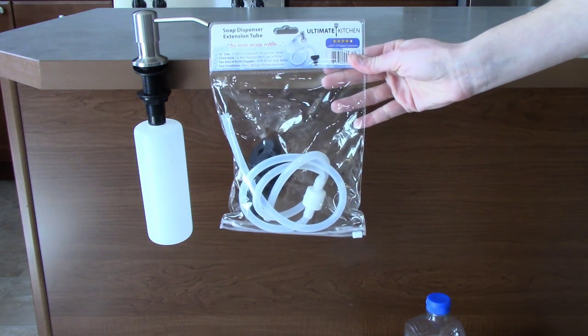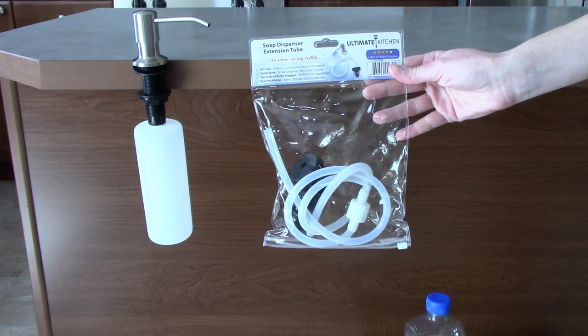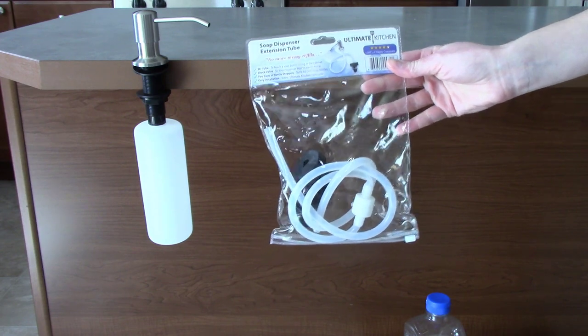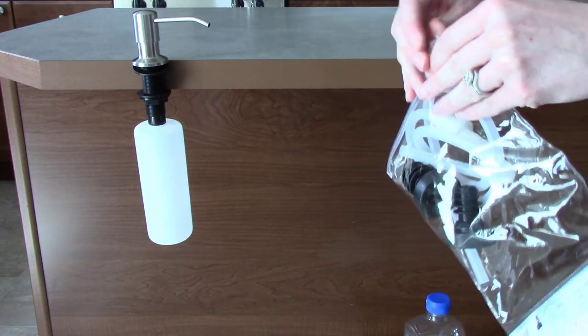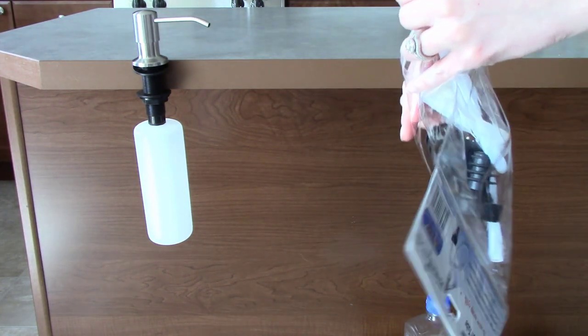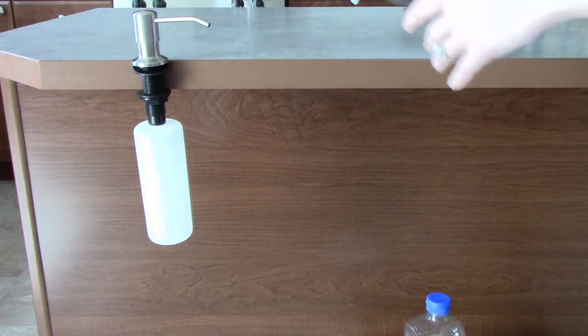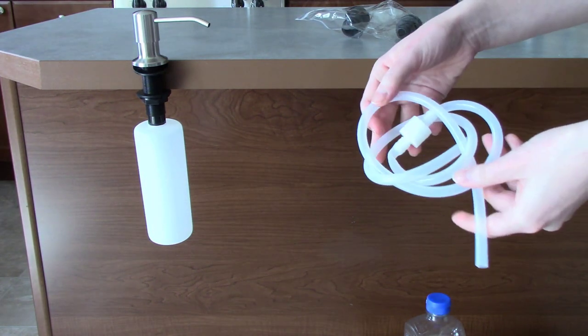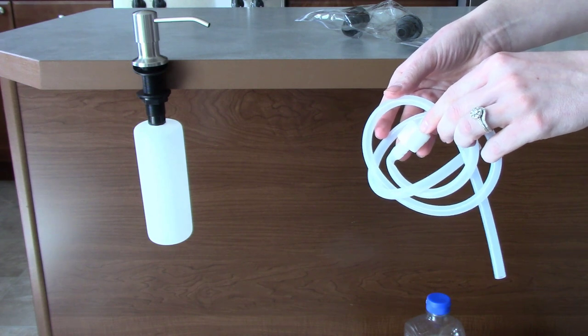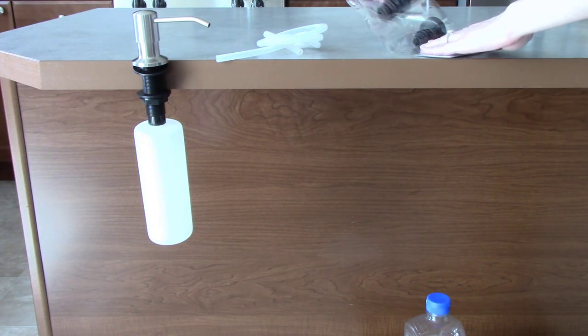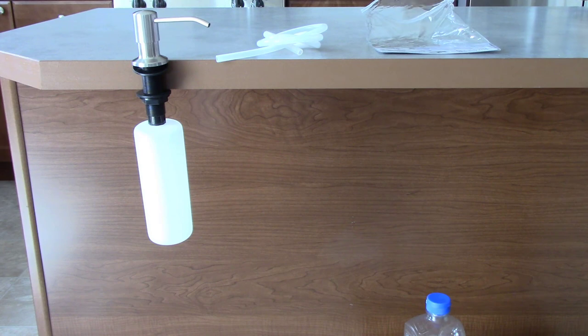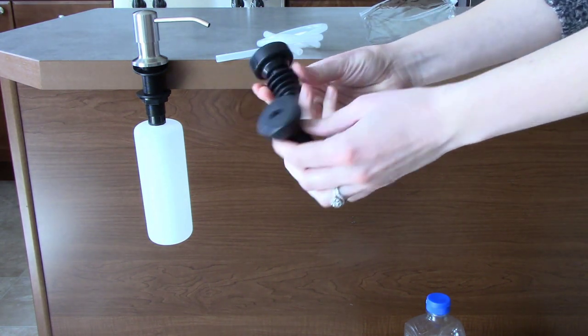When you first receive your sink soap dispenser extension tube, you will notice three main parts: the silicon tubing with built-in check valve and two different size bottle toppers.